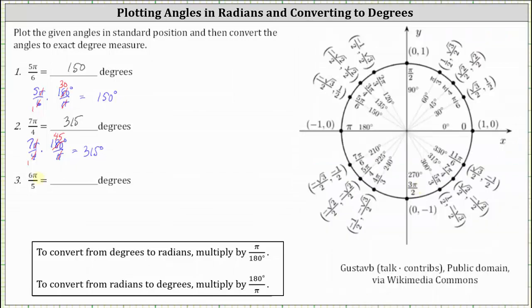For the last example, we have six pi divided by five radians, or six-fifth pi radians. Because the denominator is five, we want to mark off one-fifth pi radians. The initial side is along the positive x-axis. Since half a rotation counterclockwise is pi radians, dividing into fifths: one-fifth pi, two-fifths pi, three-fifths pi, four-fifths pi, five-fifths pi, or pi radians.